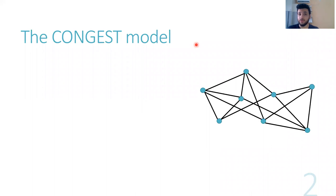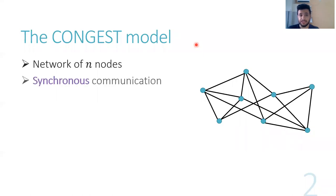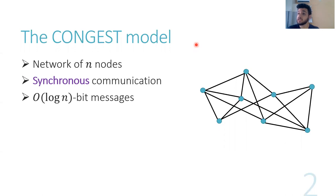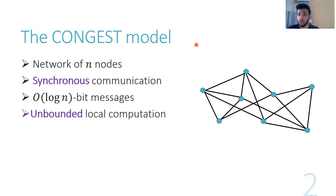We are going to focus on the CONGEST model of computation, in which we have a network of N nodes. Communication takes place in synchronous rounds. In each round, each node can send a message of O(log n) bits to each and every one of its neighbors. We have unbounded local computation inside each node.